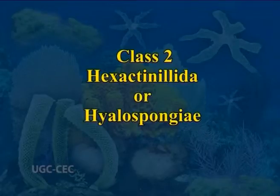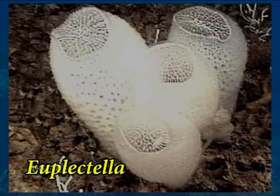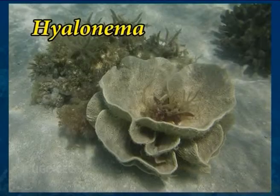Class 2 is Hexactinellida or Hyalospongiae. In Greek 'hex' means six, 'aktinos' means rays, and in Latin 'ella' is a diminutive suffix. Hexactinellida means glassy six-rayed siliceous spicules. These are mostly deep-sea species. The skeleton consists of six-rayed or triaxon siliceous spicules, separate or fused. Examples are the glass sponges: Euplectella, Hyalonema, etc.